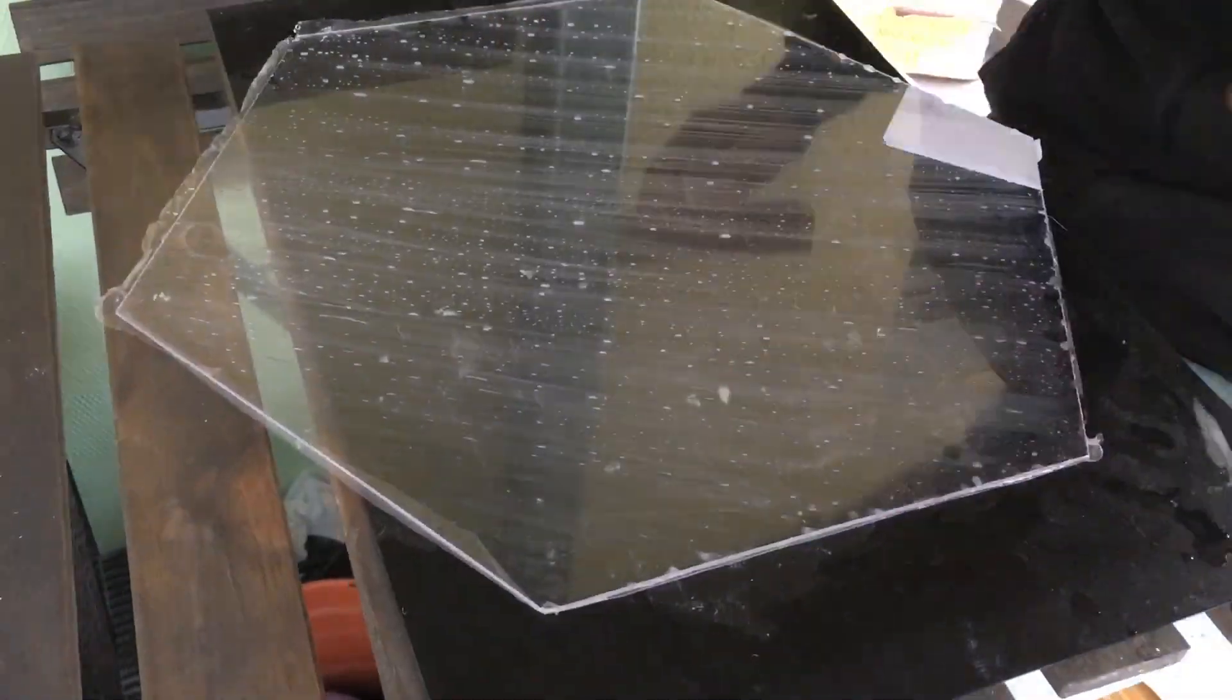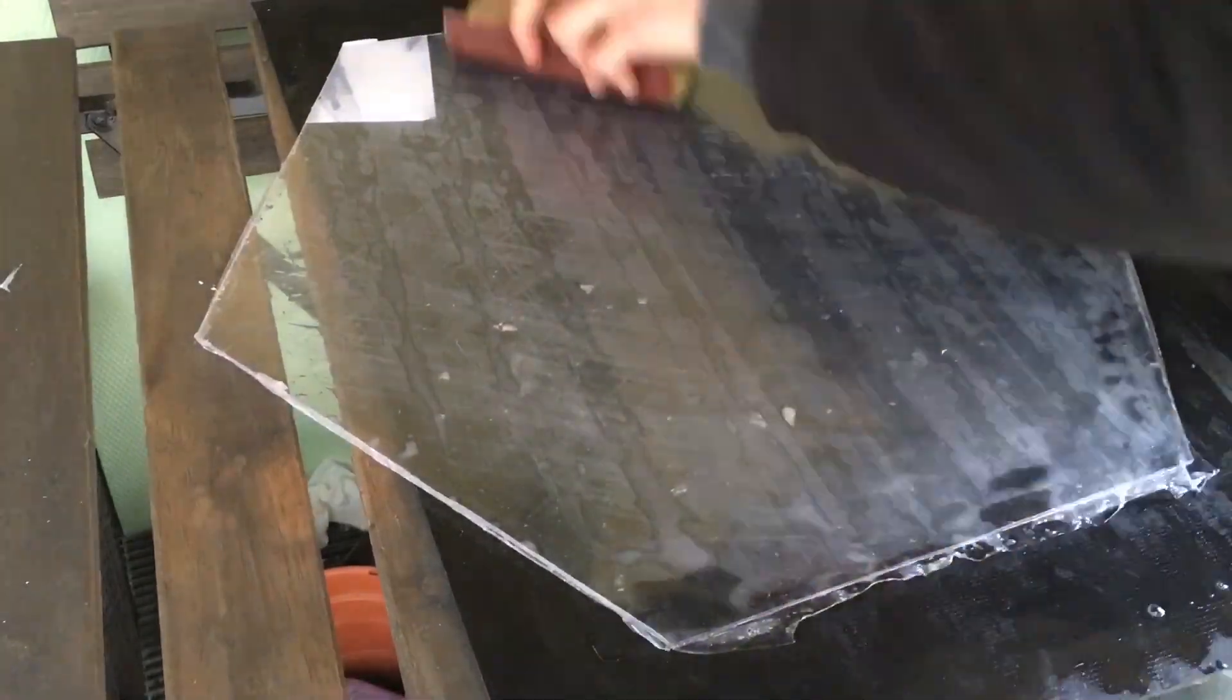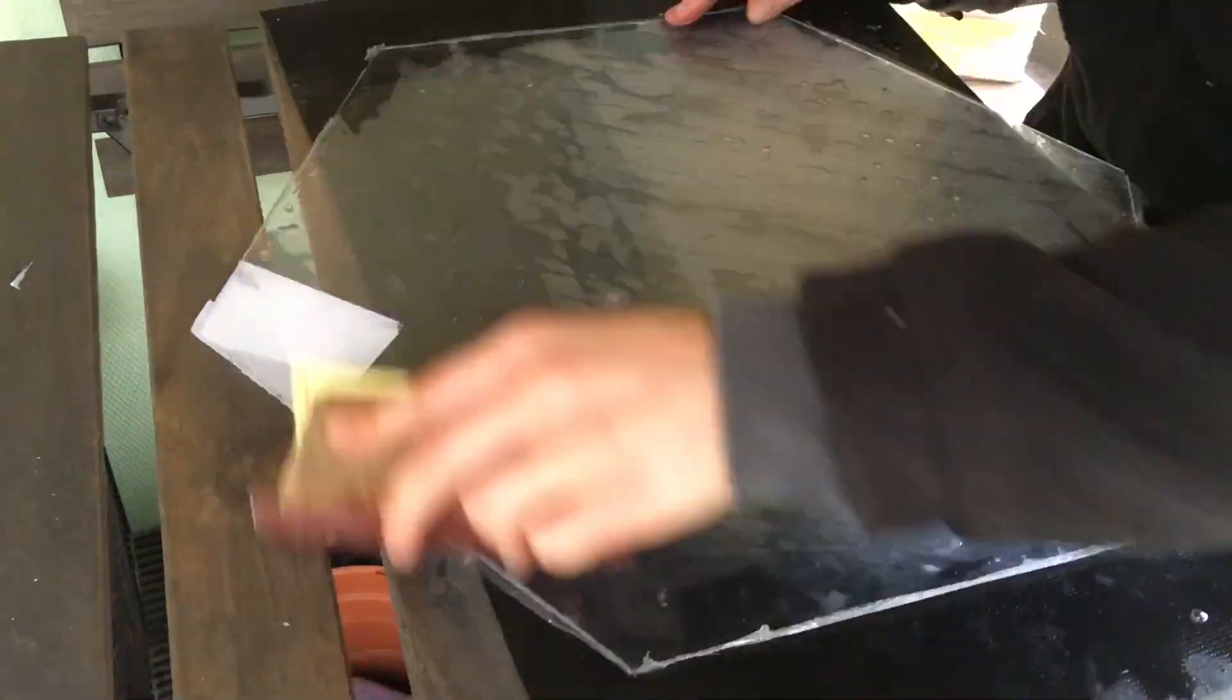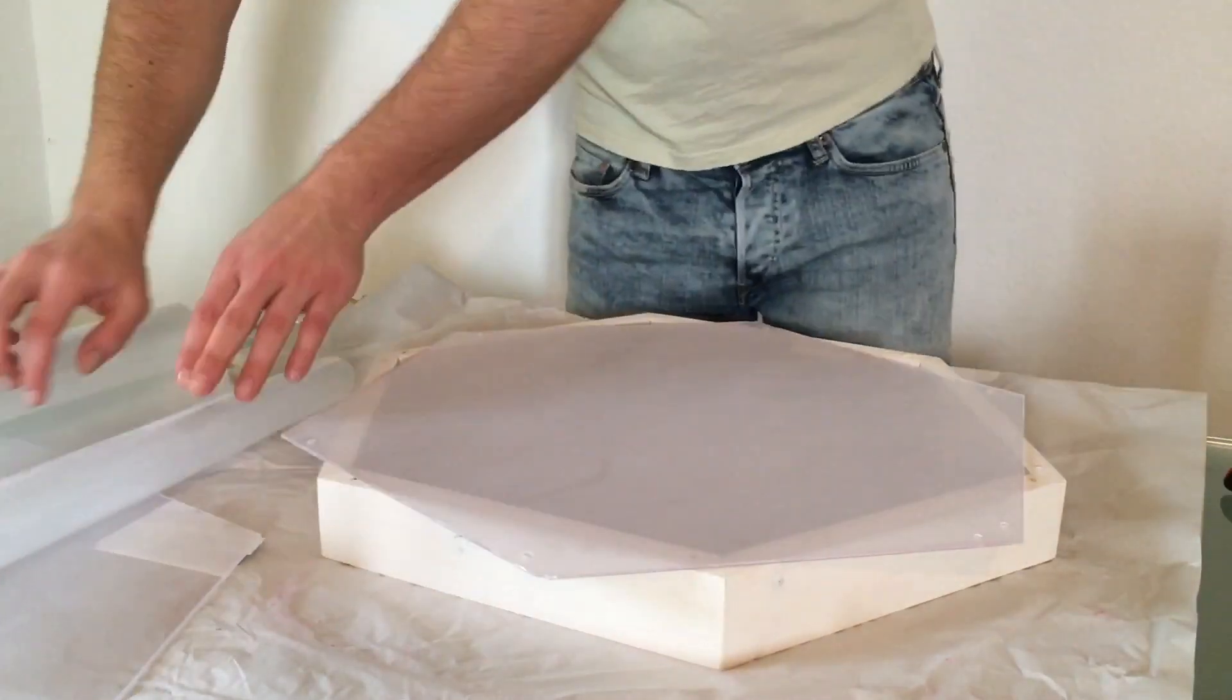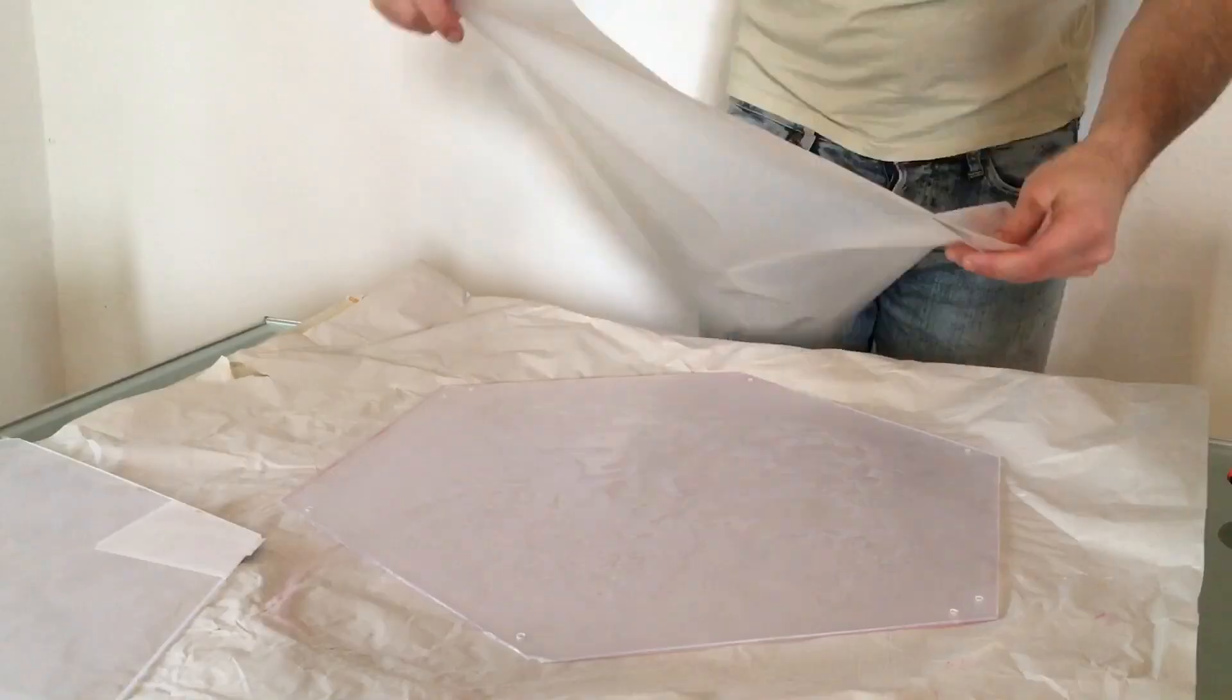I'm using a 1500 grit sandpaper to frost the plexiglass. I wasn't very satisfied how it came out.